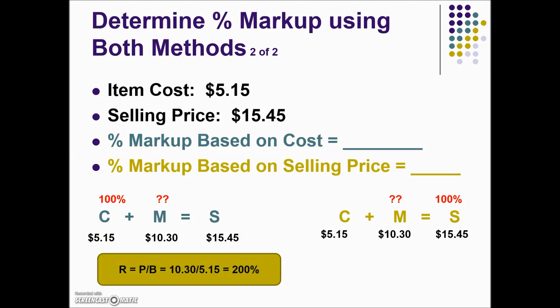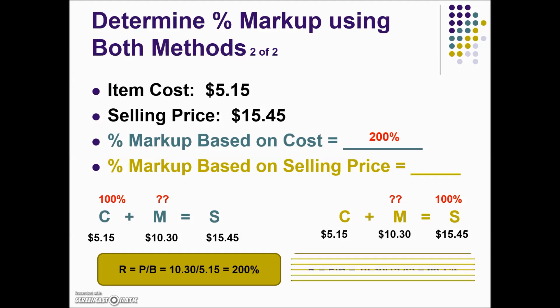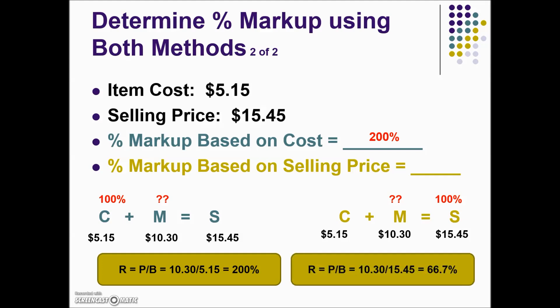To find a rate, we will take part divided by base. Converting this into a percentage, it would end up being 2 — but that's not a percentage. We always need to convert it into a percent. Moving the decimal over gives us a 200% markup based on cost. On the selling price side, percent markup based on selling price — again we're looking for rate. Our part is the same, $10.30, but our selling price is different than the previous calculation, and results in 66.7%.